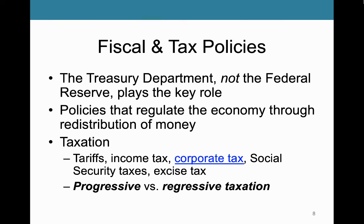Social security taxes — we all pay into the social security system when we work. The idea is that people currently working contribute social security taxes to the system, which then pays social security benefits to currently retired people. This is one of those distributive policies we talked about last time. It's not redistributive per se — it's not that the wealthy pay to support the poor. Everyone who's working is paying in to support everyone who has retired, with the theory that everyone who is currently retired has already paid into the system.